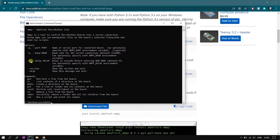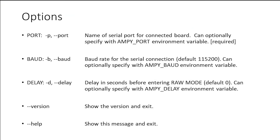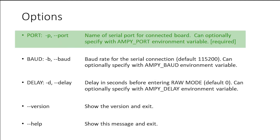We will discuss these options and commands in detail. The first option is port. Port is the port number of your USB to serial converter, which we can get from device manager. There is also an option to set ampy port as an environment variable, so we can avoid using the port number in every ampy command. Once you set ampy port as an environment variable, you don't have to use the port number in all your commands.